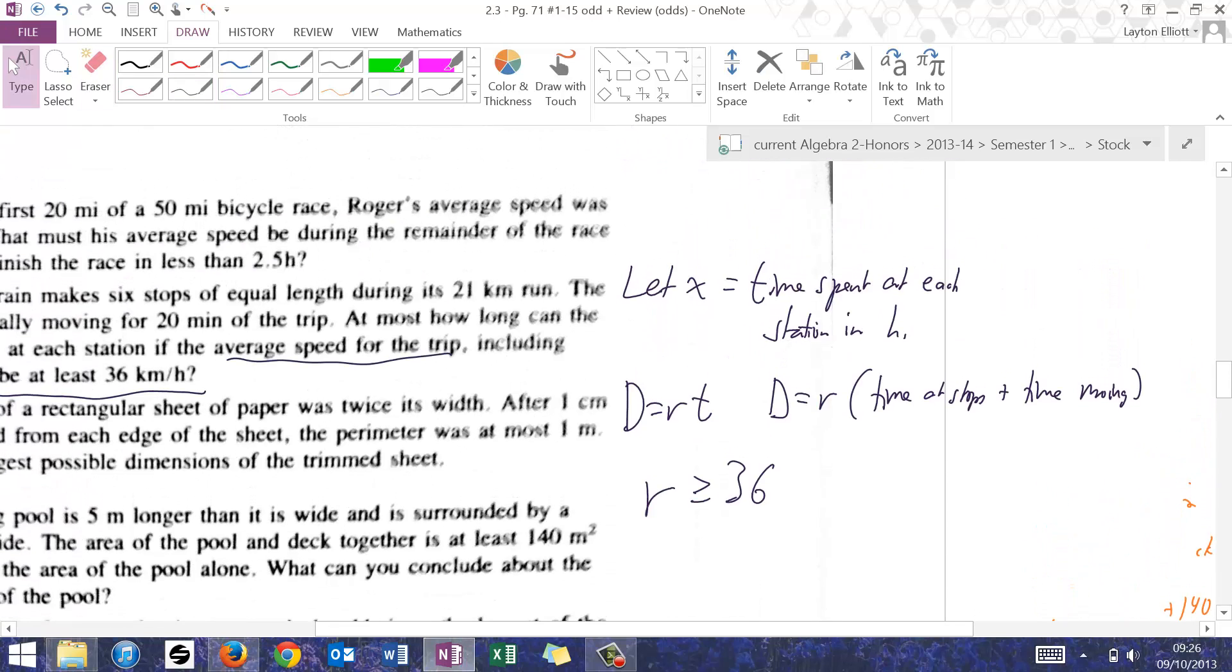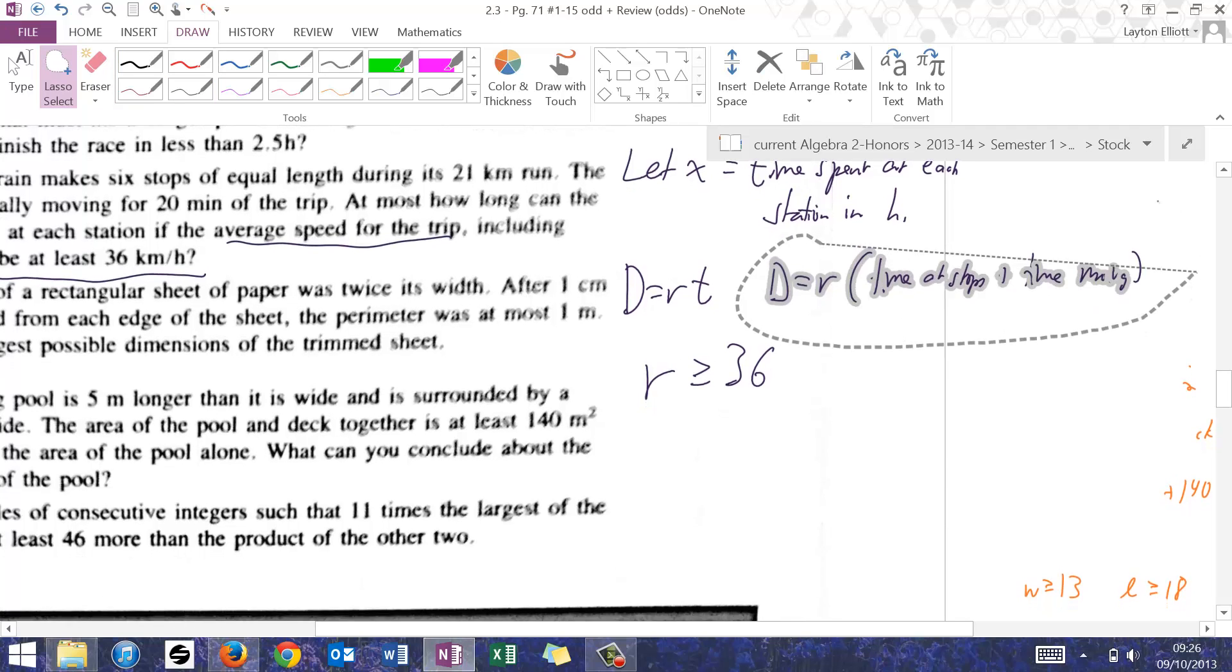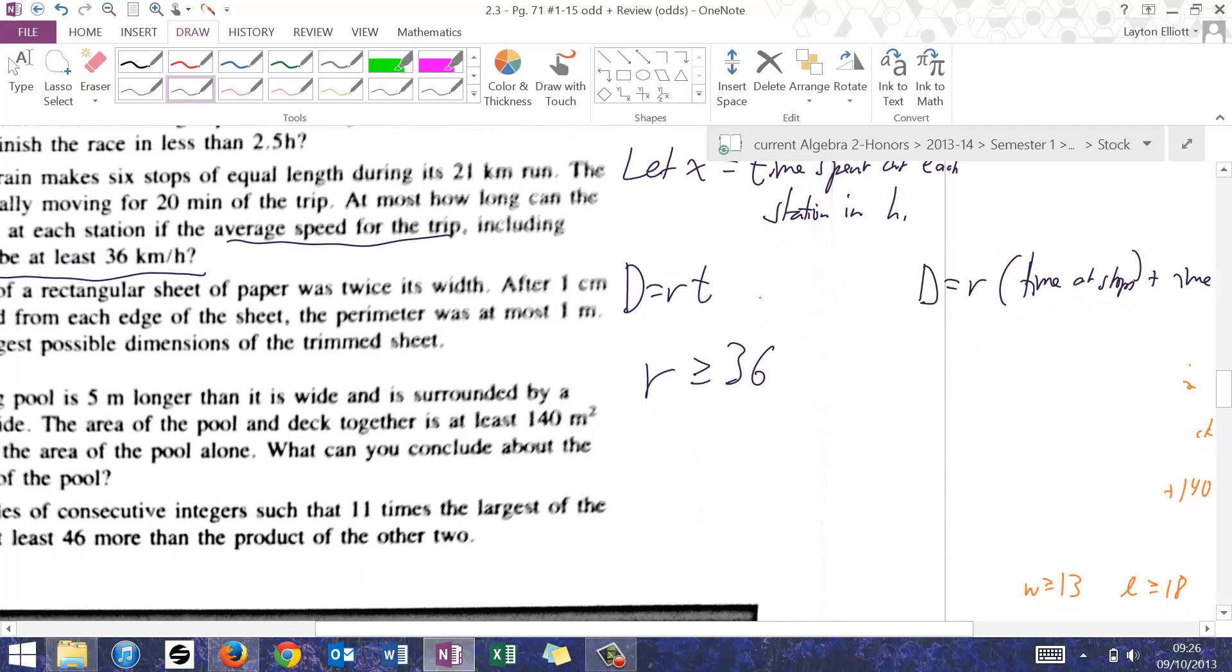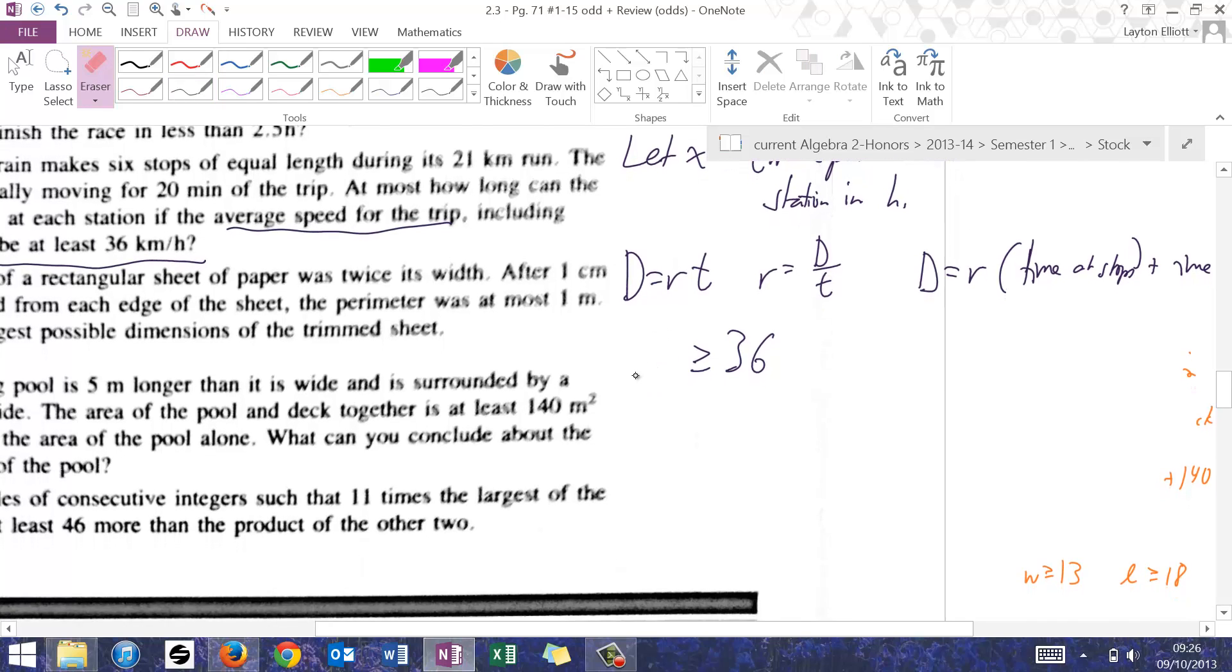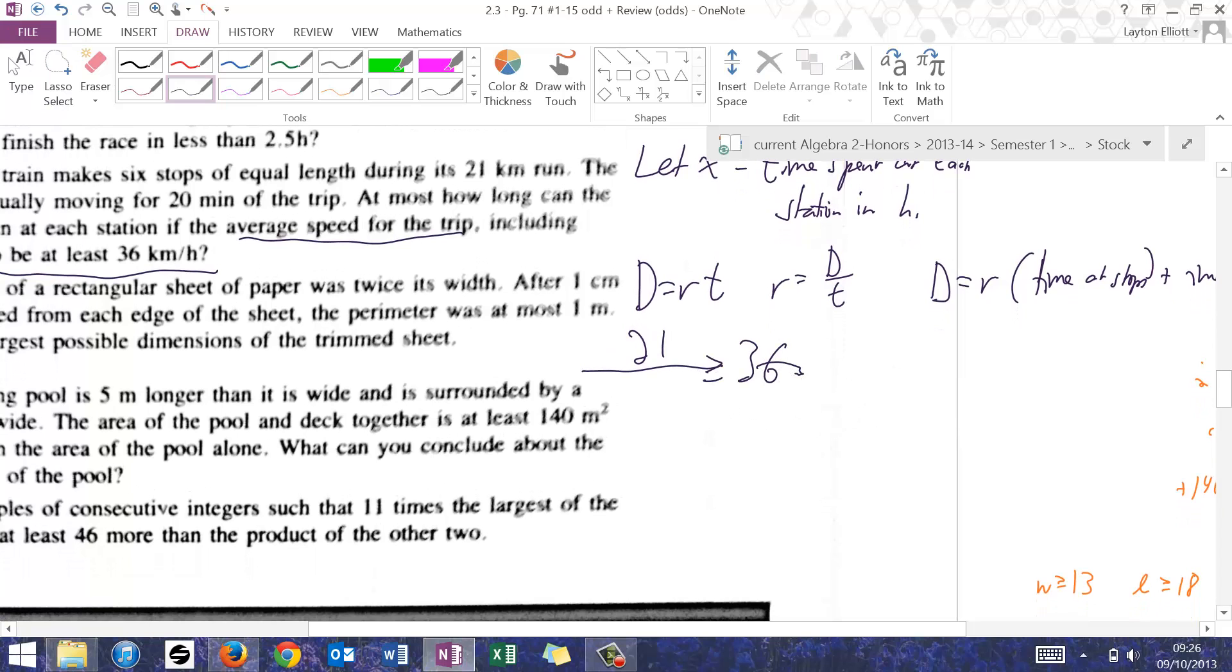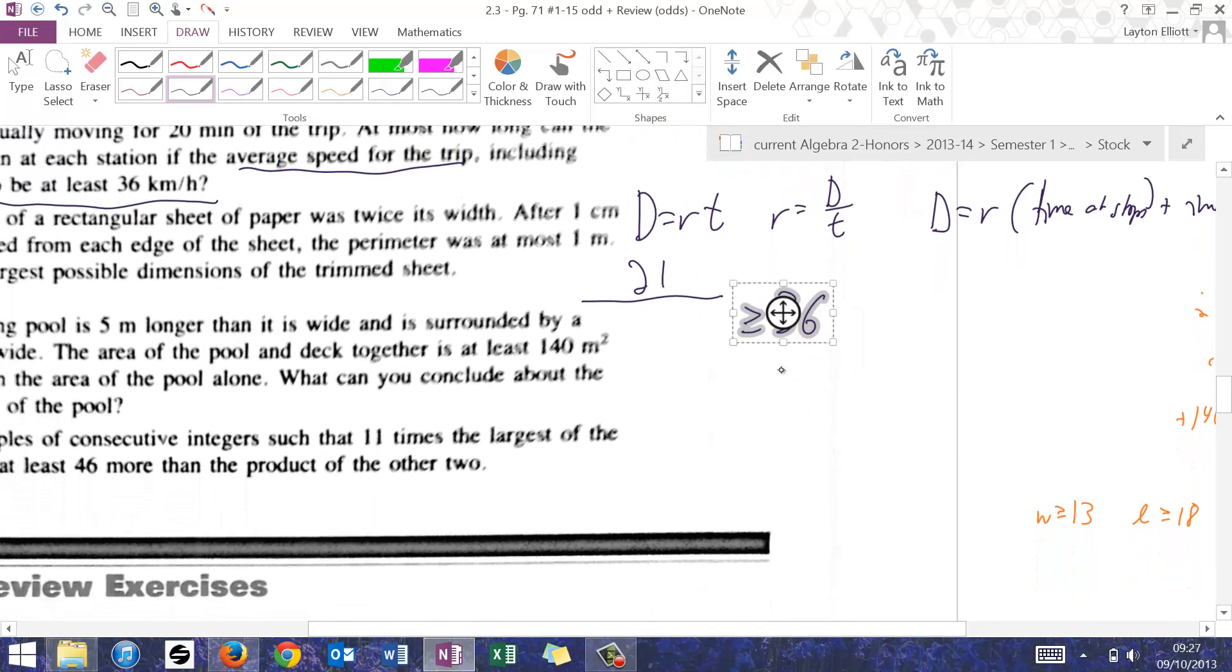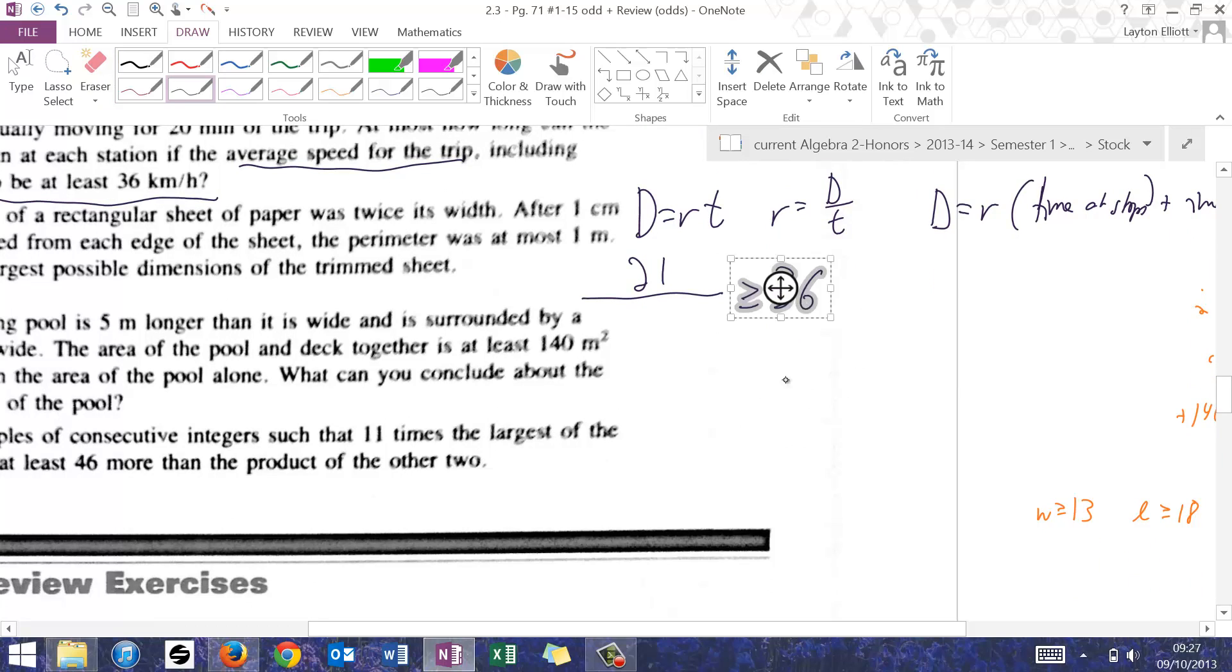Time at the stops plus the time moving. So putting this all together, rate equals distance divided by time. I'm going to substitute with the total distance, 21 kilometers, divided by the time. Now the time is an interesting thing because it is that sum. It's the sum of two times.